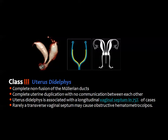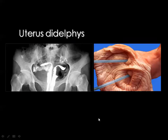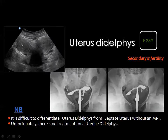Uterus didelphys, the third class, is due to complete non-fusion of the Müllerian ducts, forming two separate uterine cavities and two separate cervical canals. A vaginal septum is present in about 75% of cases. For evaluation by hysterosalpingography, two separate cannulas may need to be introduced into each cervical canal to opacify both uterine cornua.